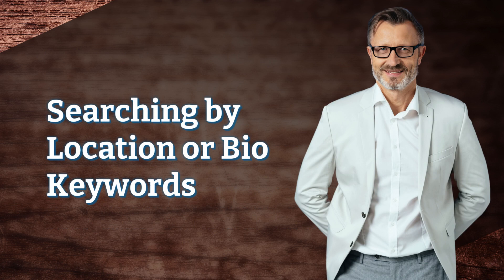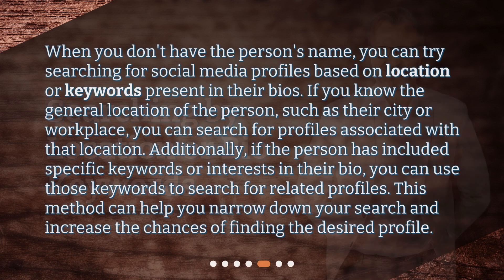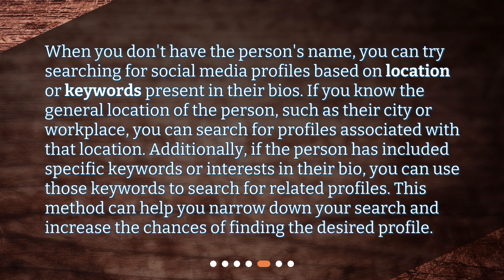Searching by location or bio keywords: When you don't have the person's name, you can try searching for social media profiles based on location or keywords present in their bios. If you know the general location of the person, such as their city or workplace, you can search for profiles associated with that location. Additionally, if the person has included specific keywords or interests in their bio, you can use those keywords to search for related profiles. This method can help you narrow down your search and increase the chances of finding the desired profile.